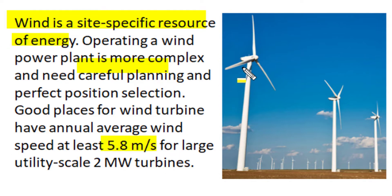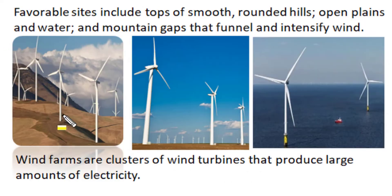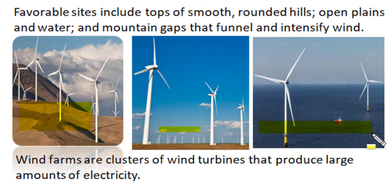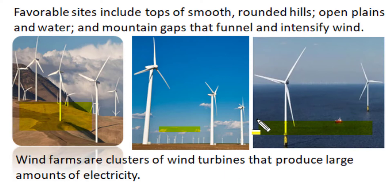For a large utility-size wind turbine of 2 megawatt power or higher, favorable sites for wind farms include the top of smooth or rounded hills, open plains, onshore water positions, or mountain gaps where funnel action can intensify wind velocities. These wind farms are clusters of several wind turbines that together can produce large amounts of electricity.